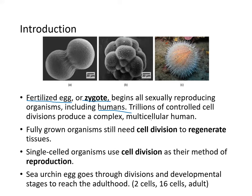Trillions of controlled cell divisions are required to produce a complex multicellular human. Fully grown organisms still need cell division to regenerate tissues like liver tissue and the lining of the gut. Single-cell organisms use cell division as their method of reproduction — this is how they make more of themselves.